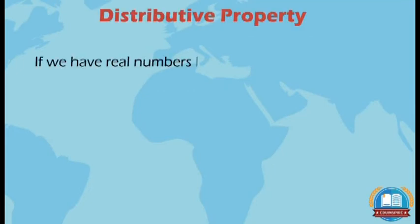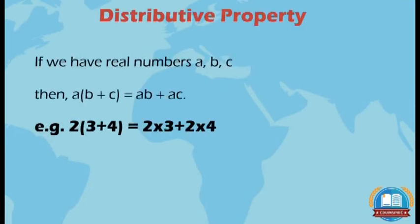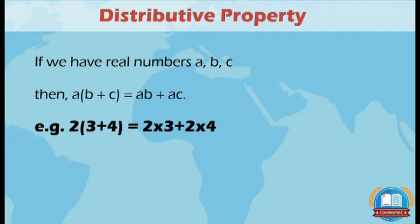The third property is distributive property. As per this property, if we have real numbers A, B, and C, then A × (B + C) = AB + AC. Example: 2 × (3 + 4) = 2 × 3 + 2 × 4.